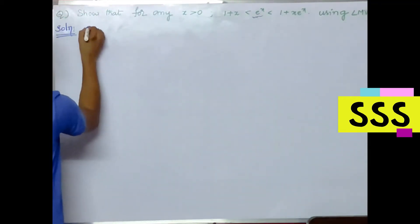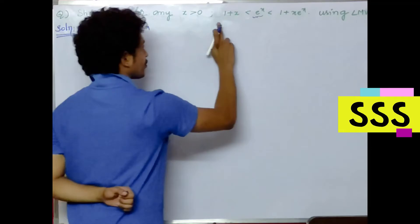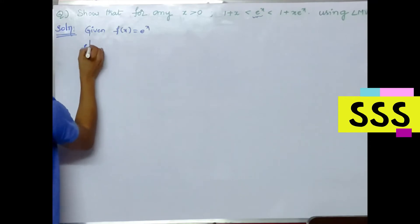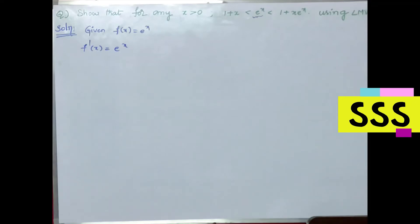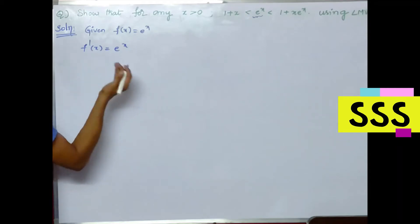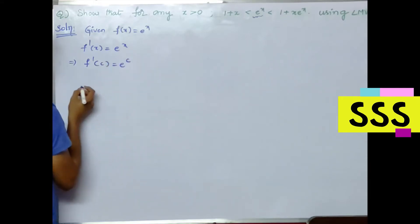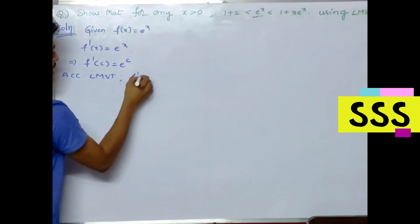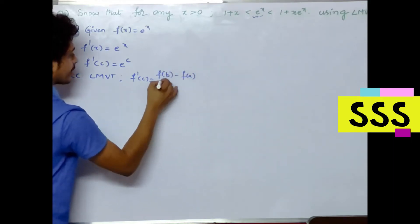f of x is given as f(x) = e^x. We have to prove this. The derivative of this function, f'(x), is e^x only. We have to find out the derivative. We know according to Lagrange's Mean Value theorem, f'(c) — substituting c — is nothing but e^c. The formula of f'(c) equals f(b) minus f(a) divided by b minus a.